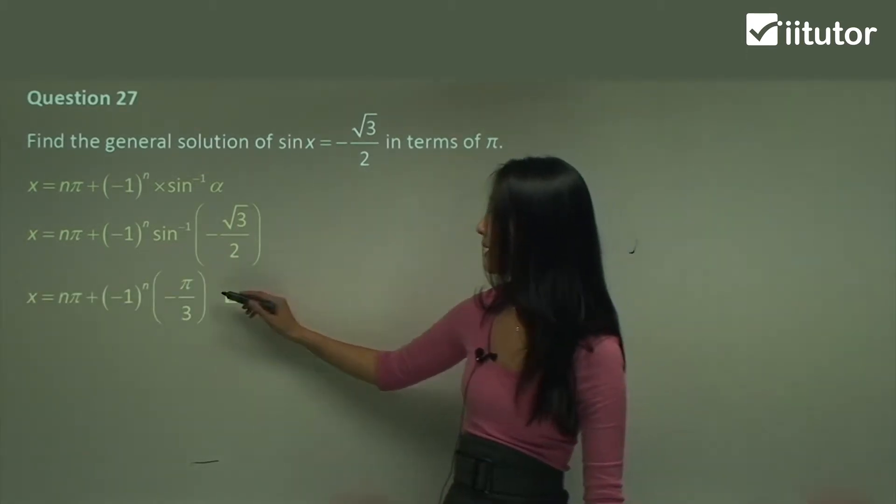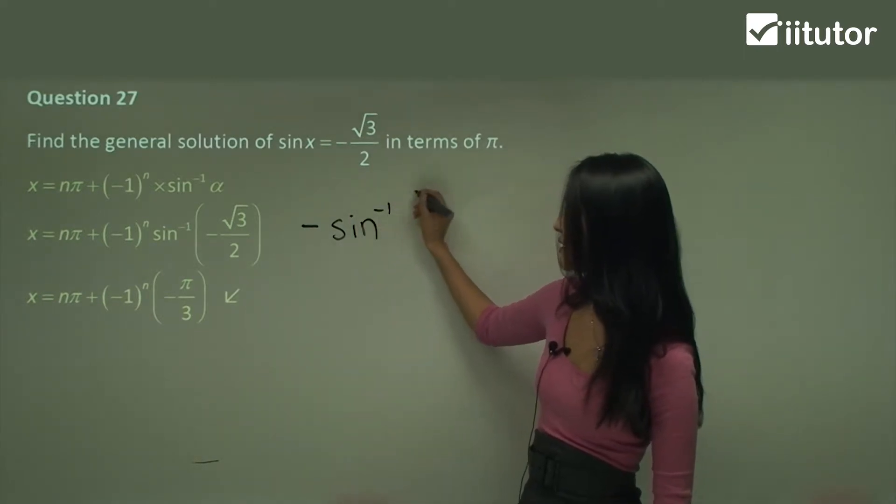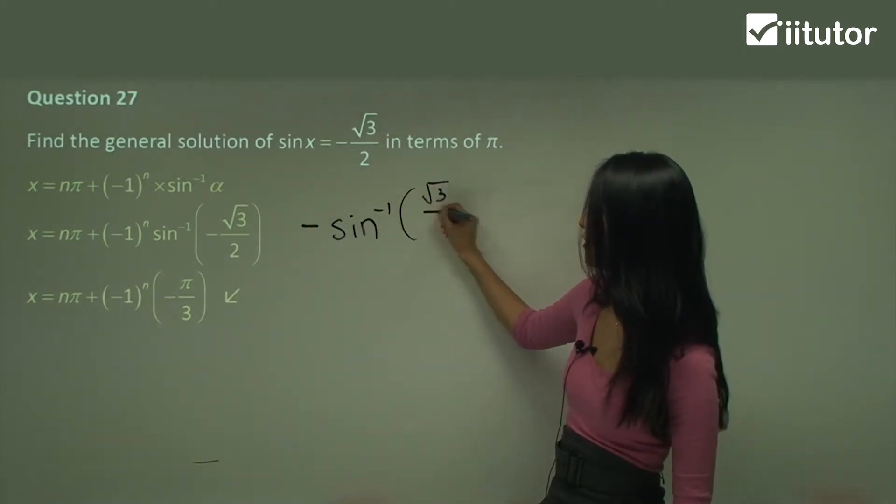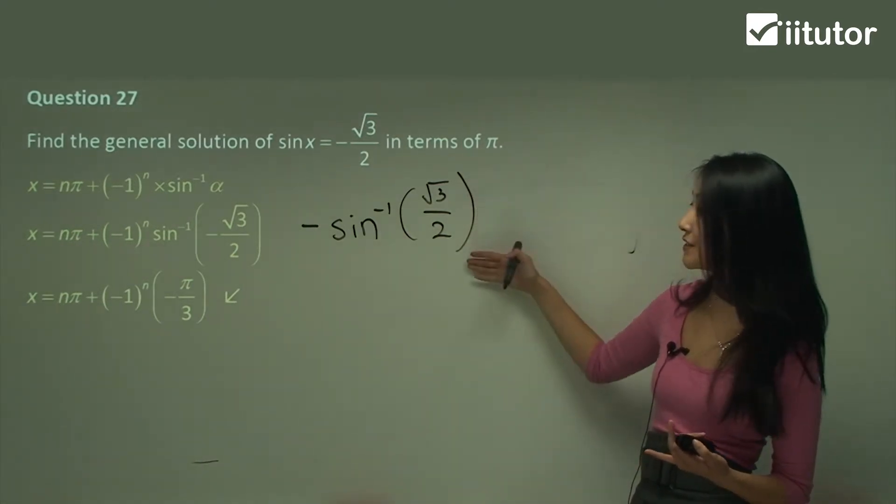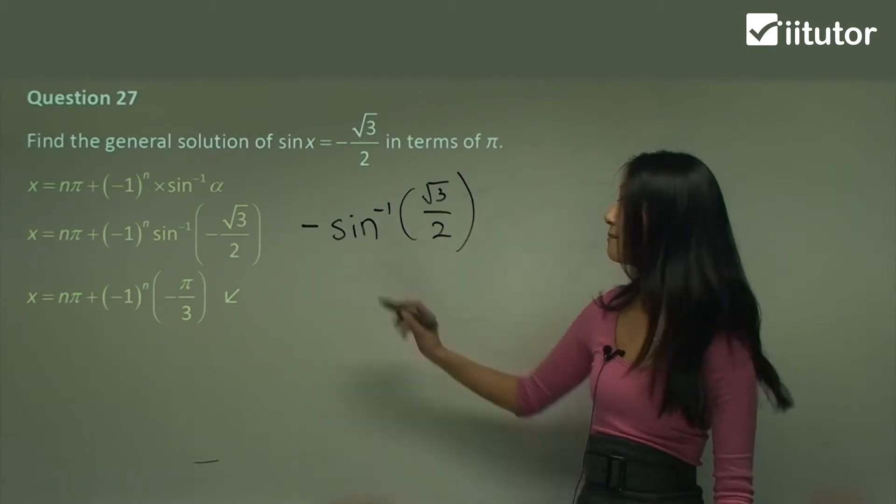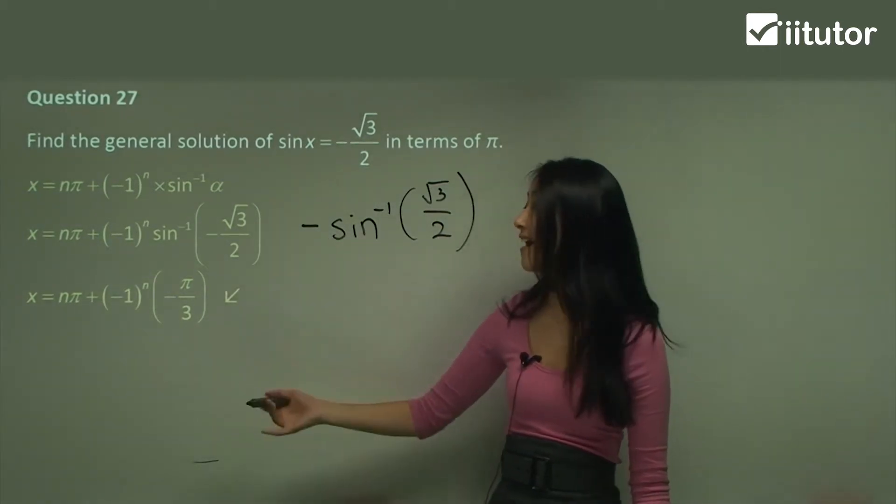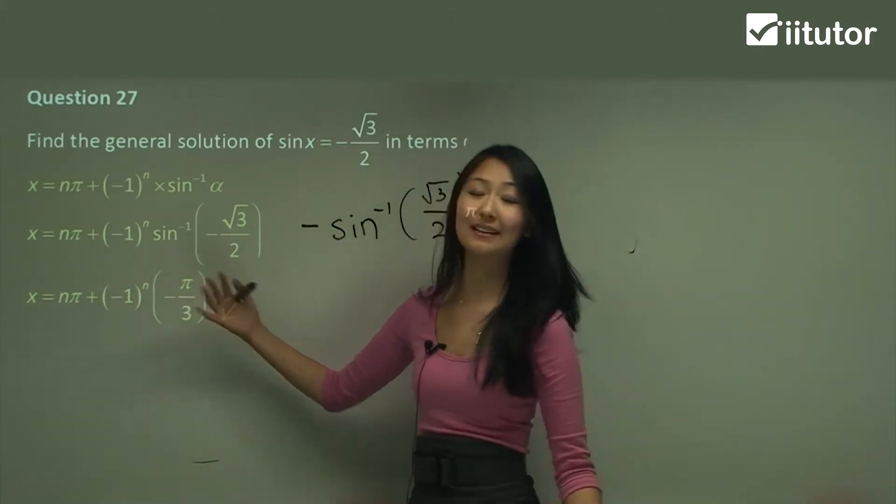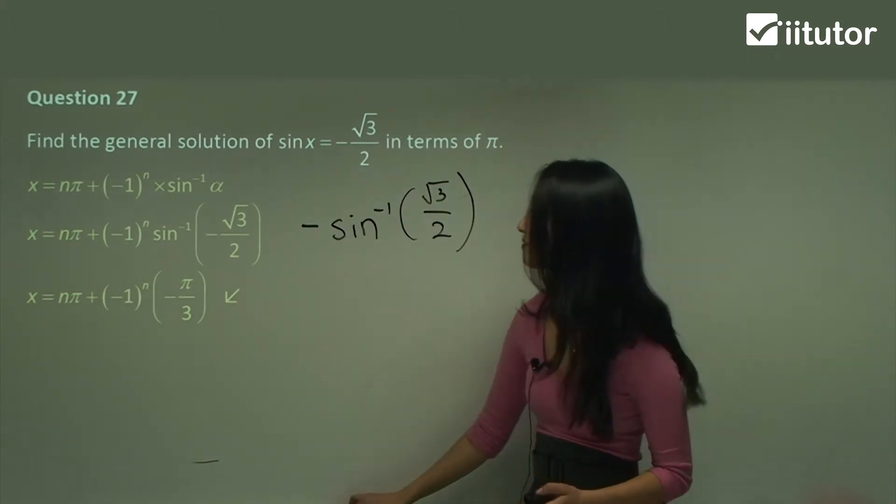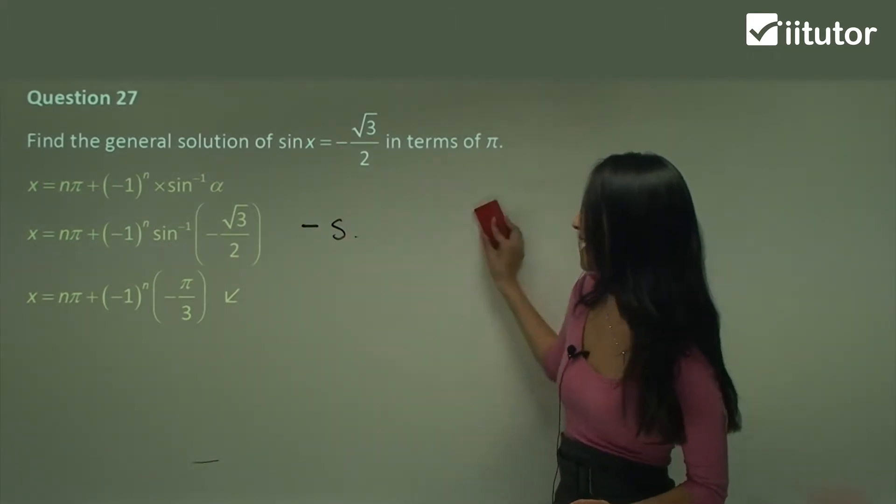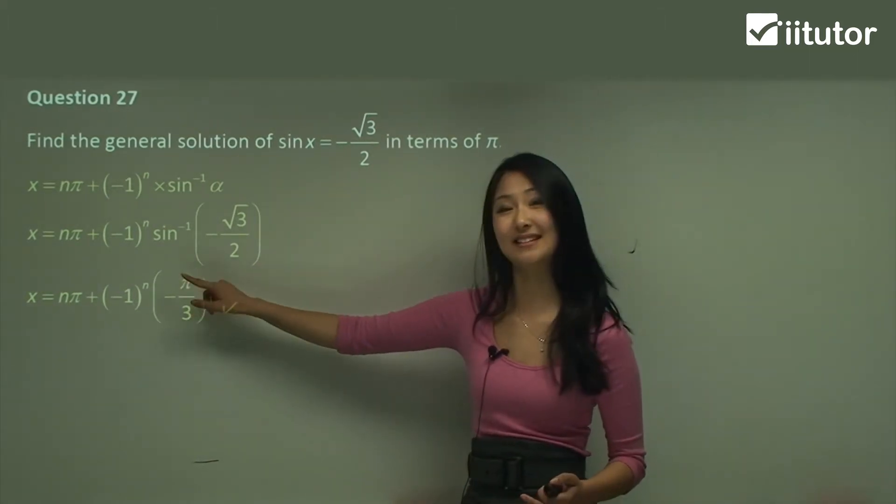So this becomes negative inverse sine of square root 3 on 2. So we just think to ourselves sine of what becomes square root 3 on 2? That's pi on 3 because we have that negative there. That's why it becomes negative pi on 3. Now you can take that negative out or you can leave it in. It really doesn't matter. Either way it's going to be correct. Okay so you can see with a negative it's quite similar. The only difference is we do have to do that extra step to work out this negative there.